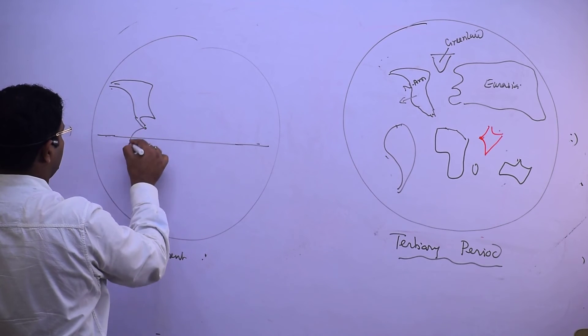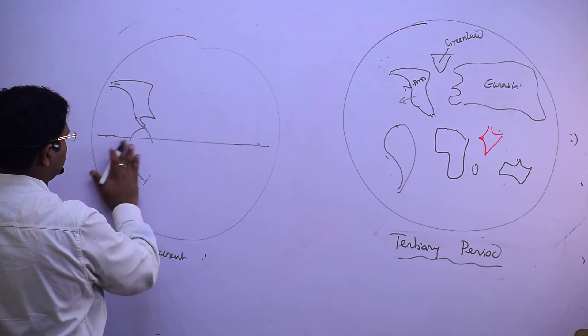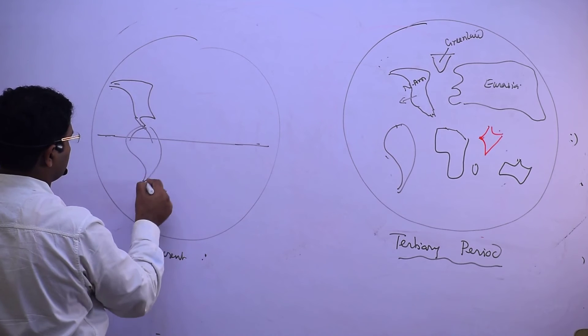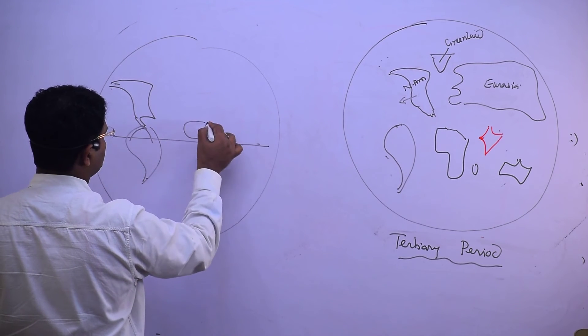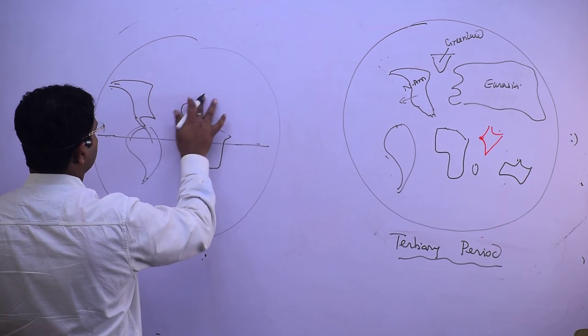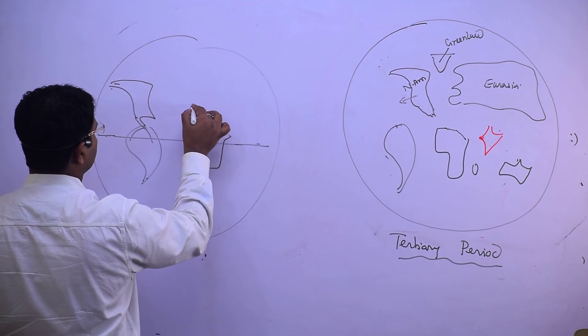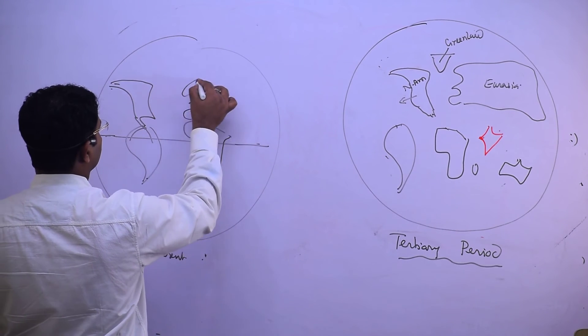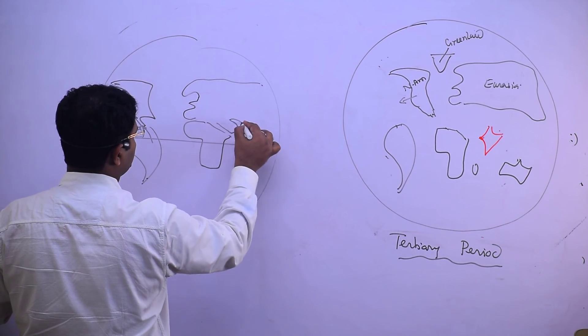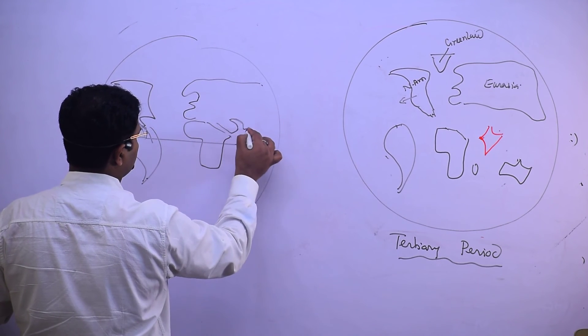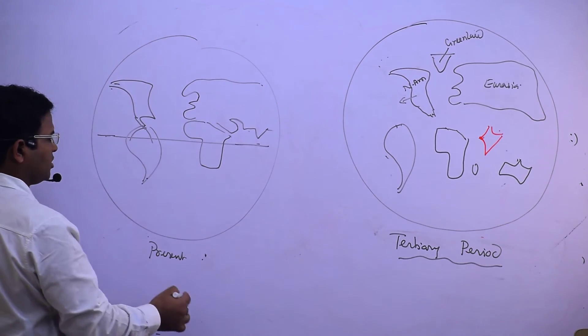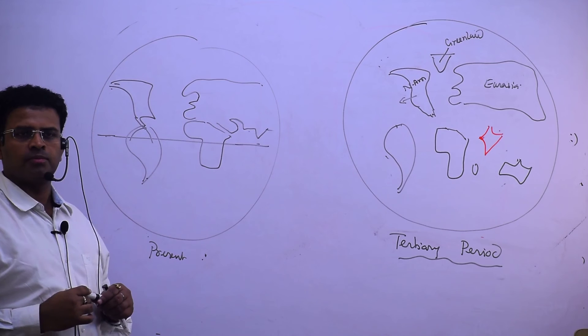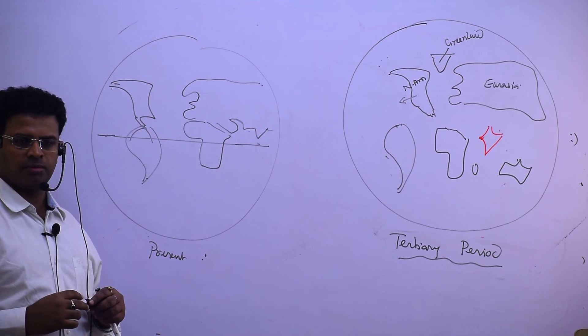And then you can just give a look at the map of the present world. Now let's give a feature like this: present world.